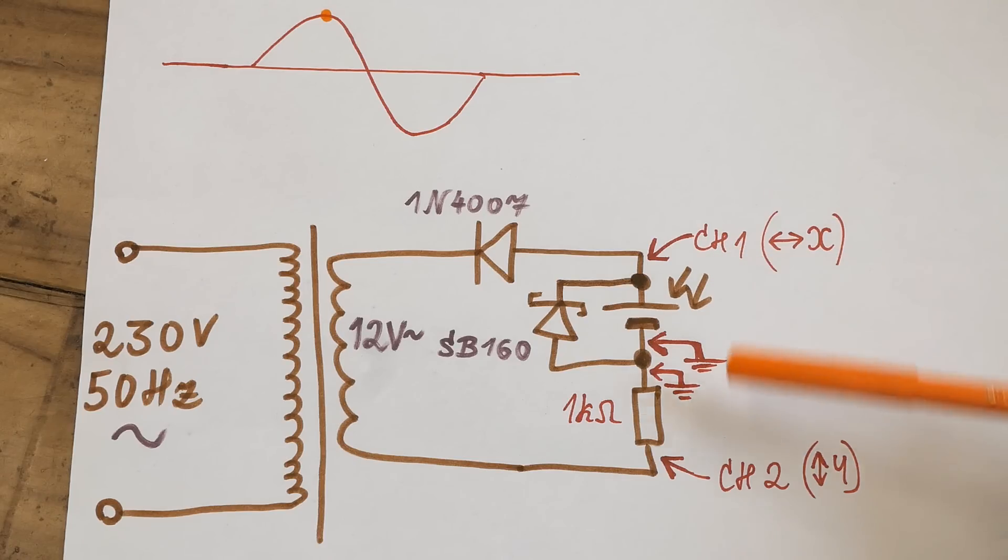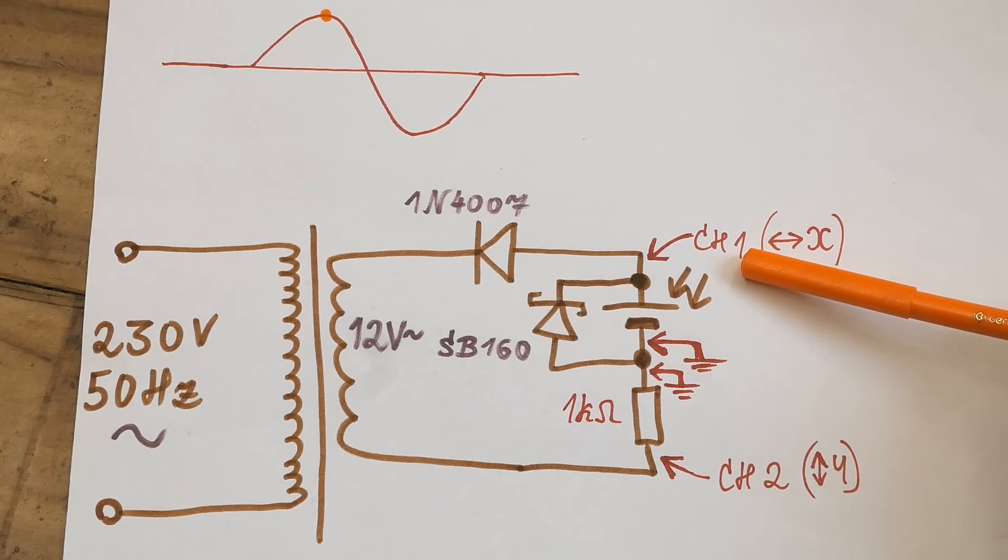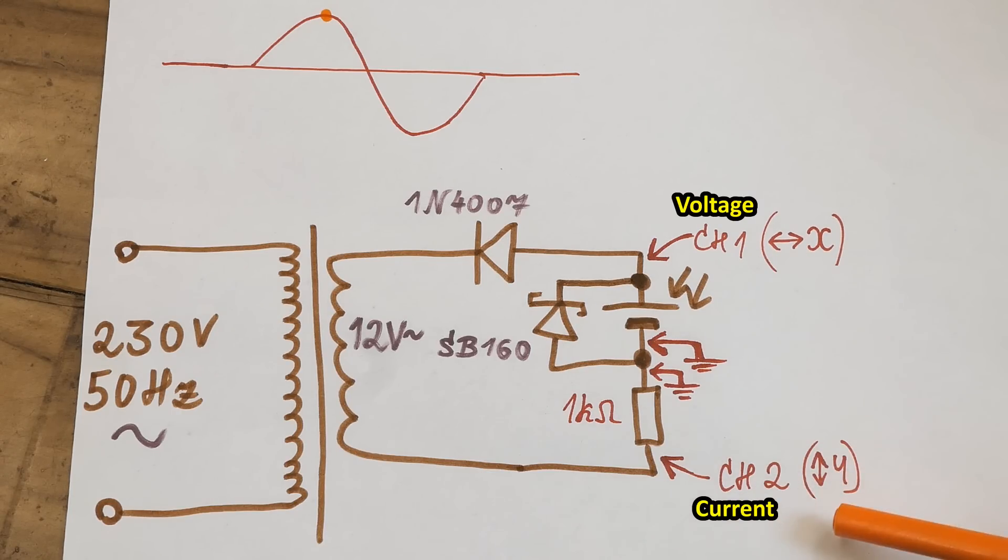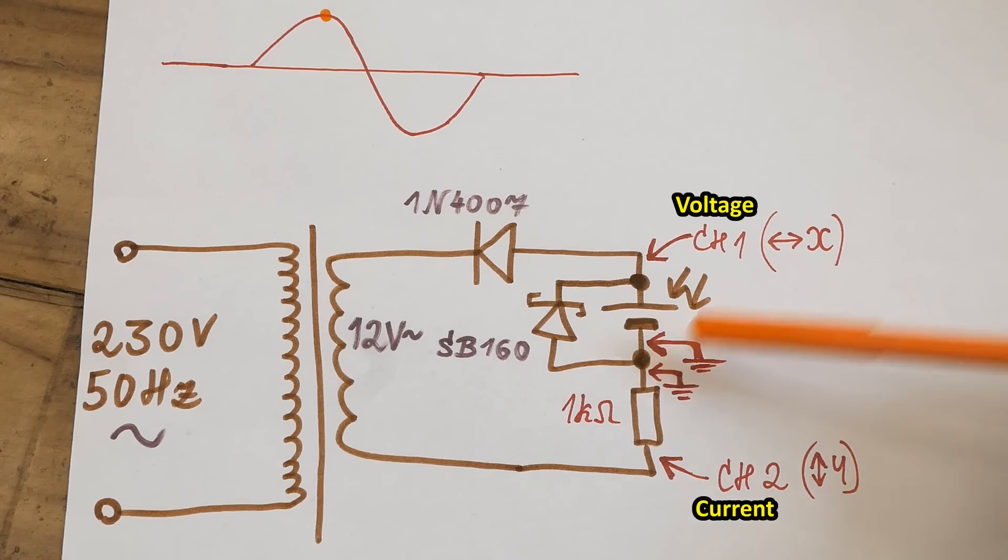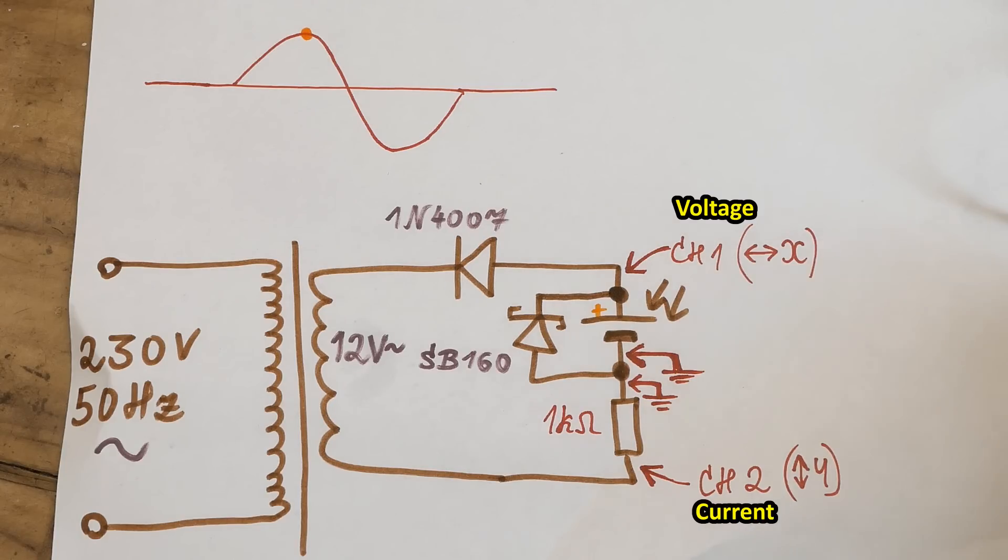And here you can see how the channels of the oscilloscope are connected. It's in XY mode. Here is the X channel or horizontal channel, and here is the Y channel or the vertical. And of course both ground clips of the probes are connected here. And this is basically all you need.